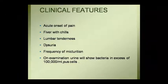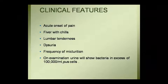In the clinical features of acute pyelonephritis: pain starts acutely, the lumbar region tends to be tender, and there is increased frequency of urination. Bacteriuria is present — approximately 100,000 or more bacteria per milliliter are found in the urine.